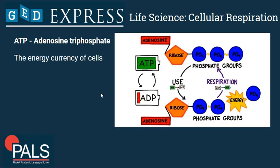ATP — adenosine triphosphate — is the energy currency of our cells. It's the money that cells can spend on any process that requires energy, basically.